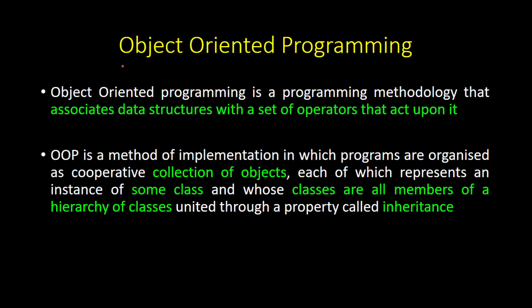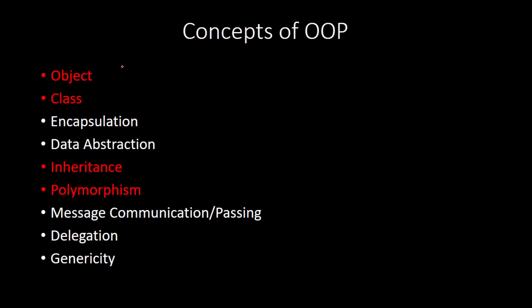Before we define what object-oriented programming is, let's try to understand the different concepts that surround it. Finally, we can come to a conclusion about what it is defined as. So let's get started with the first concept: object.